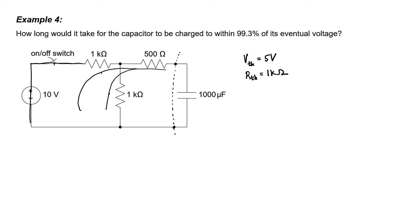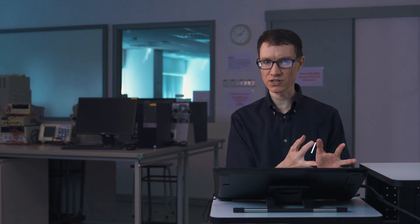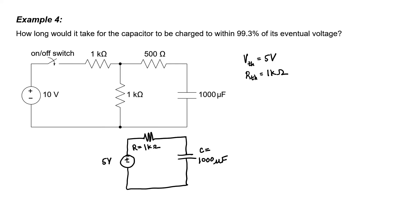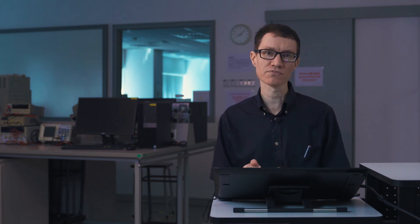Let's redraw the circuit in a simplified way. From the perspective of the capacitor, this simplified circuit is equivalent to the more complicated original circuit. It's worth noting that questions about the interior of the original circuit — for example, how much power the 10 volt source is supplying — cannot be answered using the Thevenin equivalent. But from the capacitor's perspective, the current and voltage at the terminals are identical to the more complicated circuit, which is why the Thevenin method is so powerful.